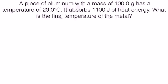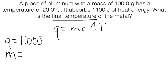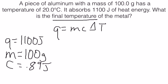In this problem, we're going to solve for the final temperature of a substance. So within the formula, we're going to be solving for the final temperature piece — the delta T. Q in this case is 1,100 joules, our mass is 100 grams, and C for aluminum is 0.89 joules per gram degrees Celsius. And then our delta T is going to be the final temperature, Tf, minus the initial temperature, which was given to us as 20 degrees Celsius.